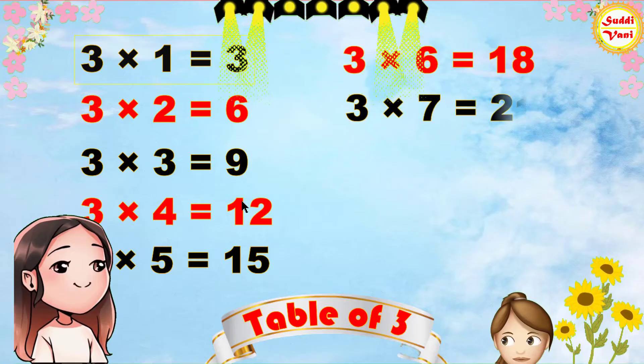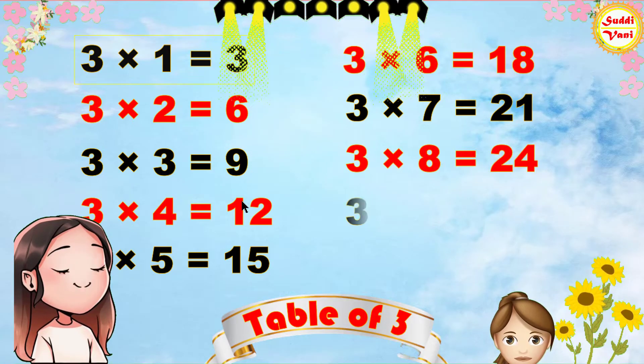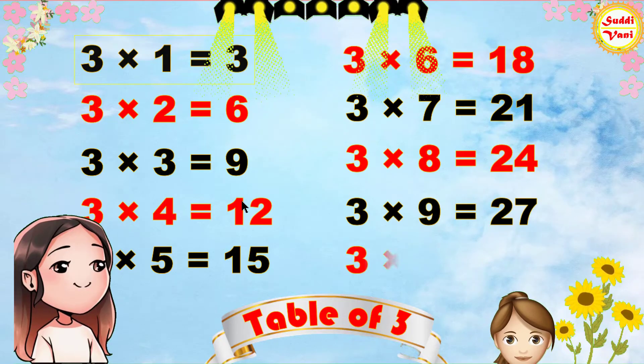3 7s are 21, 3 8s are 24, 3 9s are 27, 3 10s are 30.